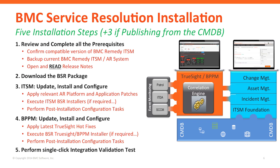Finally, once you've completed those steps on each of those servers, you want to go to the operation called one-click validation. What that will do is make sure all the connection points are in place and working as expected. That's it: review the pre-reqs, download the package, do the installation on the Remedy Service Desk — update, install, configure — go over to the TrueSight server, same concept — update, install, configure — and then confirm that all the connection points are in place.